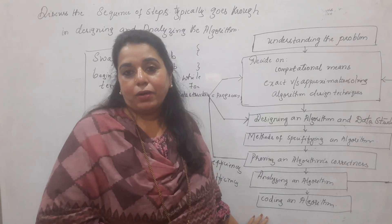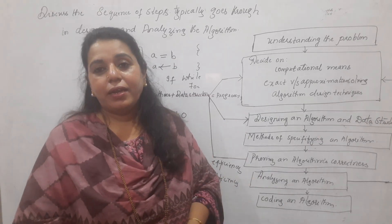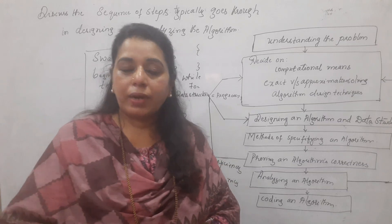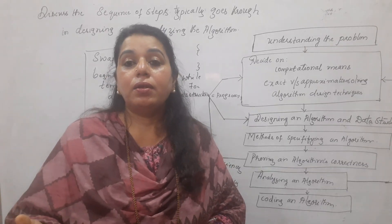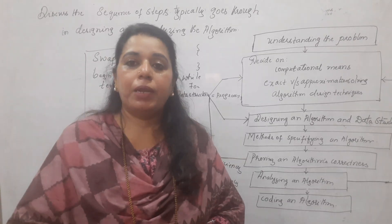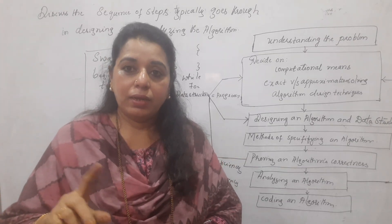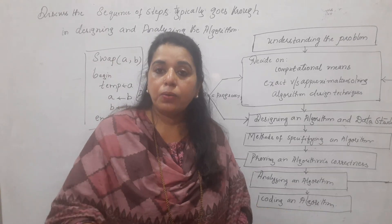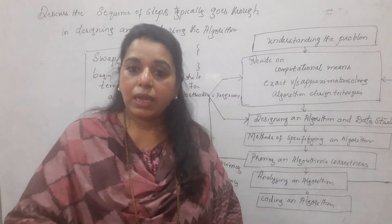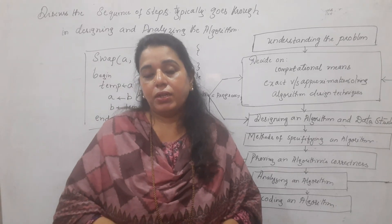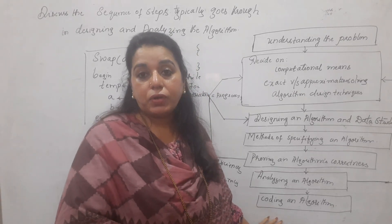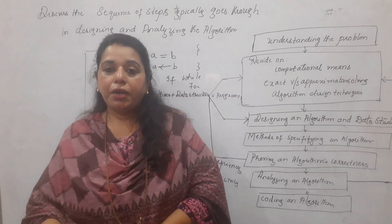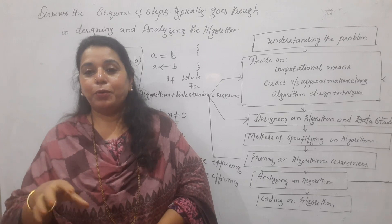Finally, the last step is coding the algorithm. The algorithm written in description or pseudo code is converted into a programming language. Once you execute, run, and debug the program and eliminate all errors, you carry out testing for all possible inputs. Even after the algorithm stage checks, you must test the program again with all input types to verify correct output.